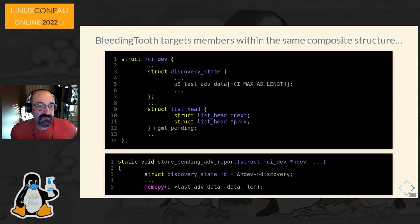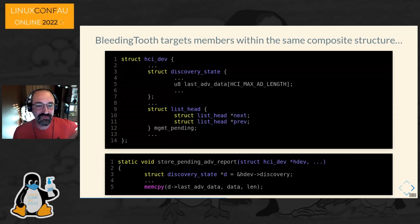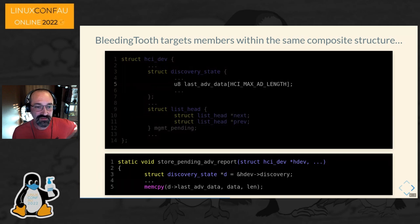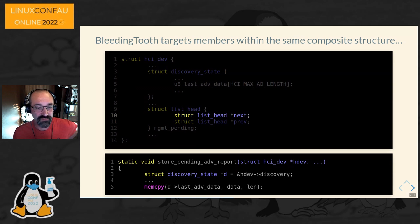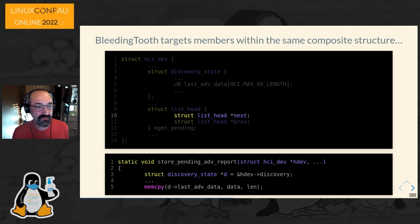What actually happened with the Bleeding Tooth attack is it was attacking stuff within the same composite structure, just past the end of the buffer being used by the memcopy. Specifically, it wrote past 'last_advertised_data' and clobbered the list head for next and continued its attack. So that's an example of going past one member and hitting some secret thing you didn't want to expose. The memcopy was perfectly happy to do it because it wasn't past the end of the HCI dev structure itself.